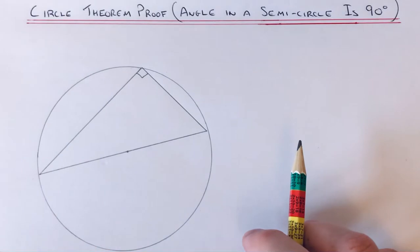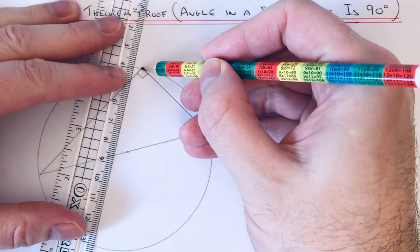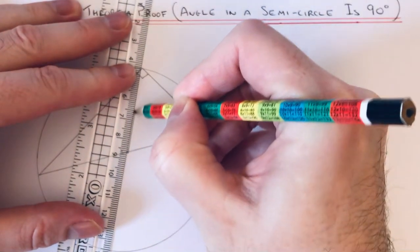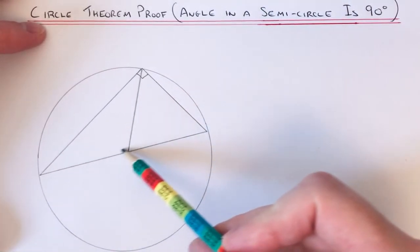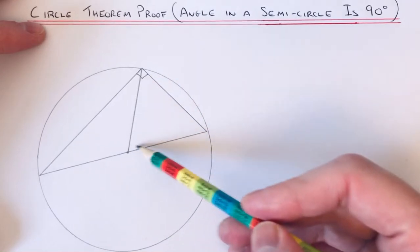Okay, so to do this, what we're going to do is draw in the radius from this vertex to the center of the circle. And what we've got here then, we've got two isosceles triangles, so we've got one on the left and then we've got one on the right.